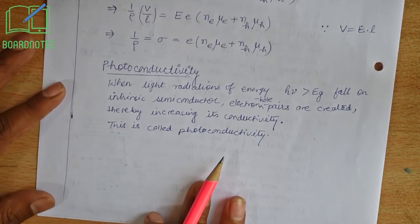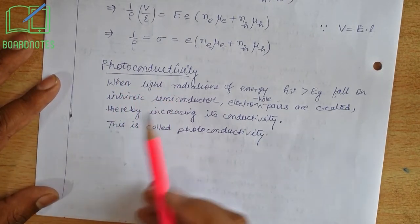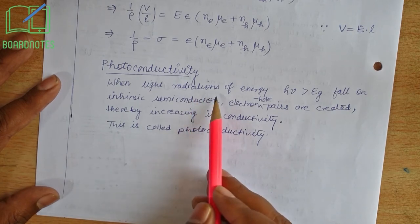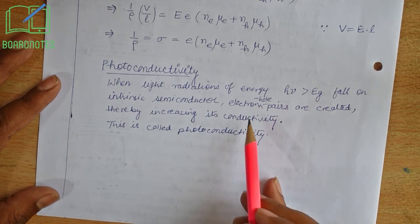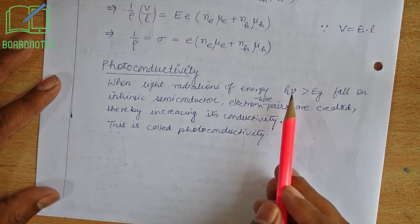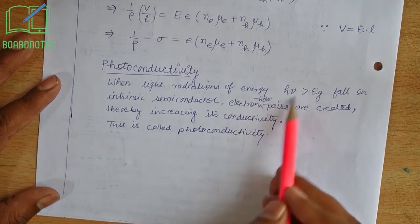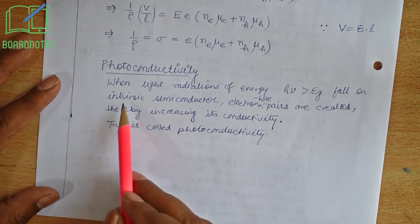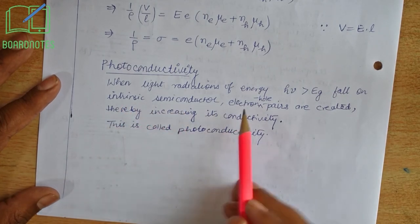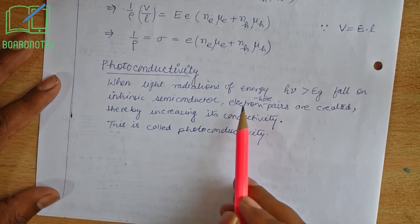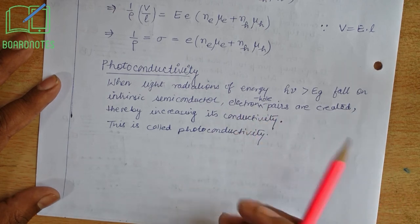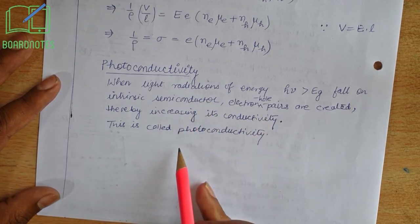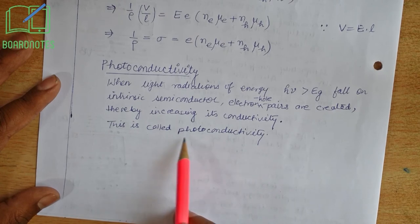Coming to photoconductivity: light radiations are comprised of photons, and photons have energy h·ν. Whenever a photon or light radiation with energy hν greater than the energy gap falls on an intrinsic semiconductor, it will create an electron-hole pair. When electron-hole pairs are created, the conductivity of the semiconductor is increased. This process is called photoconductivity.